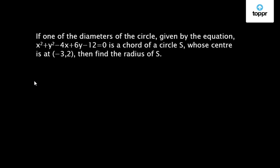Let us discuss a question on coordinate geometry which came in J-2016. So here is the question. If one of the diameters of the circle given by the equation x² + y² - 4x + 6y - 12 = 0 is a chord of a circle S whose center is at (-3, 2), then find the radius of S.